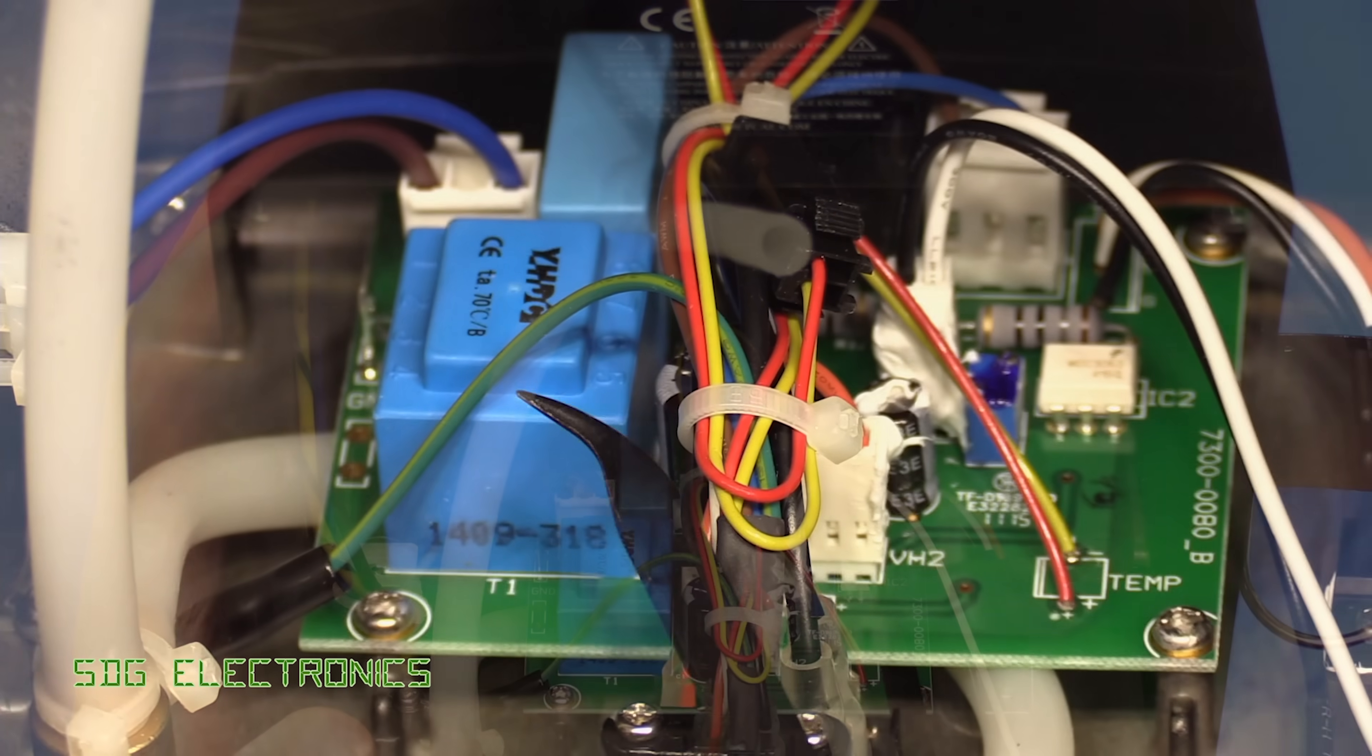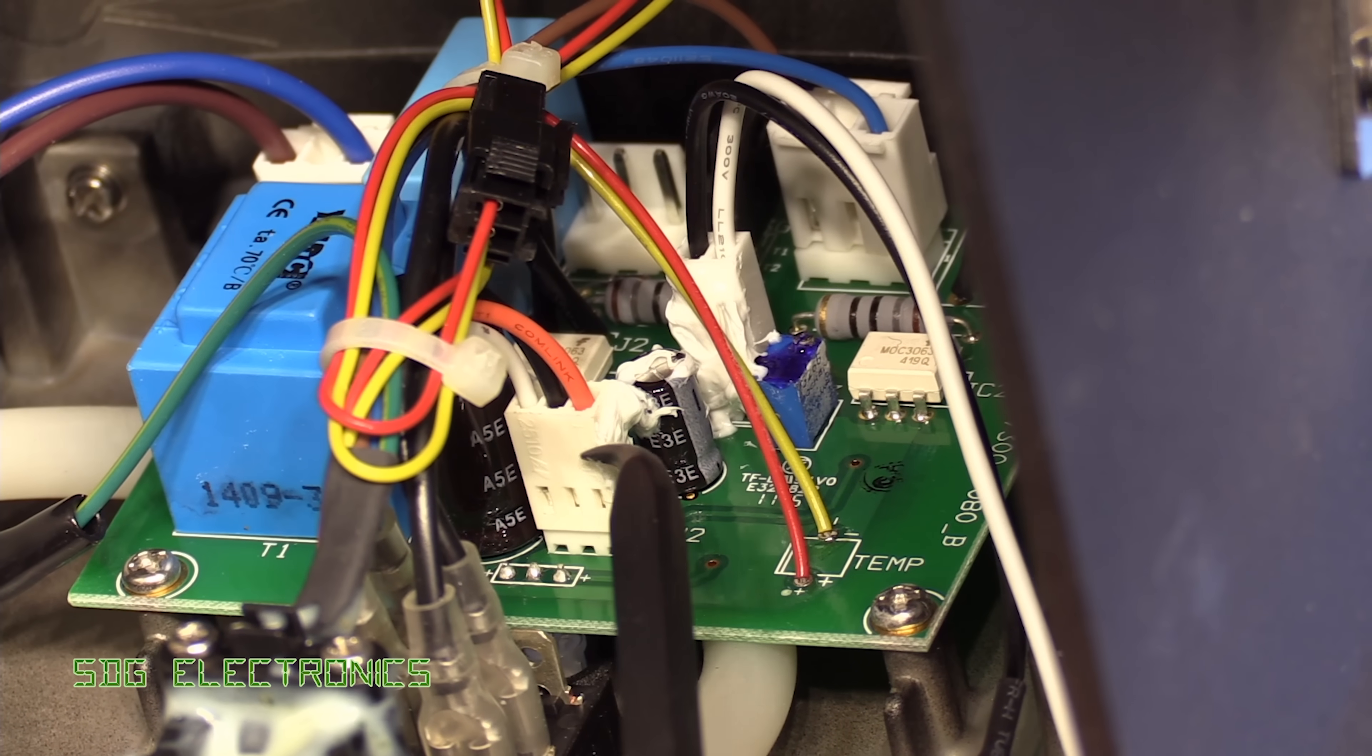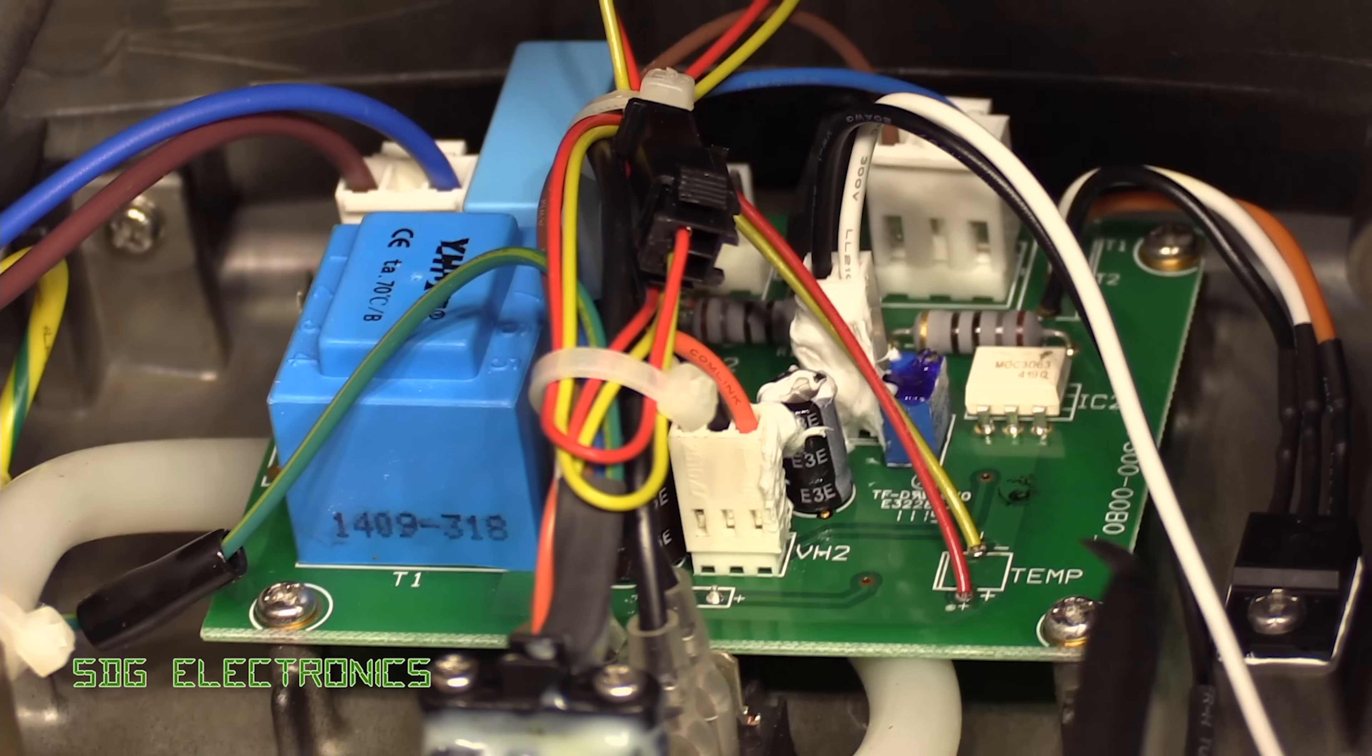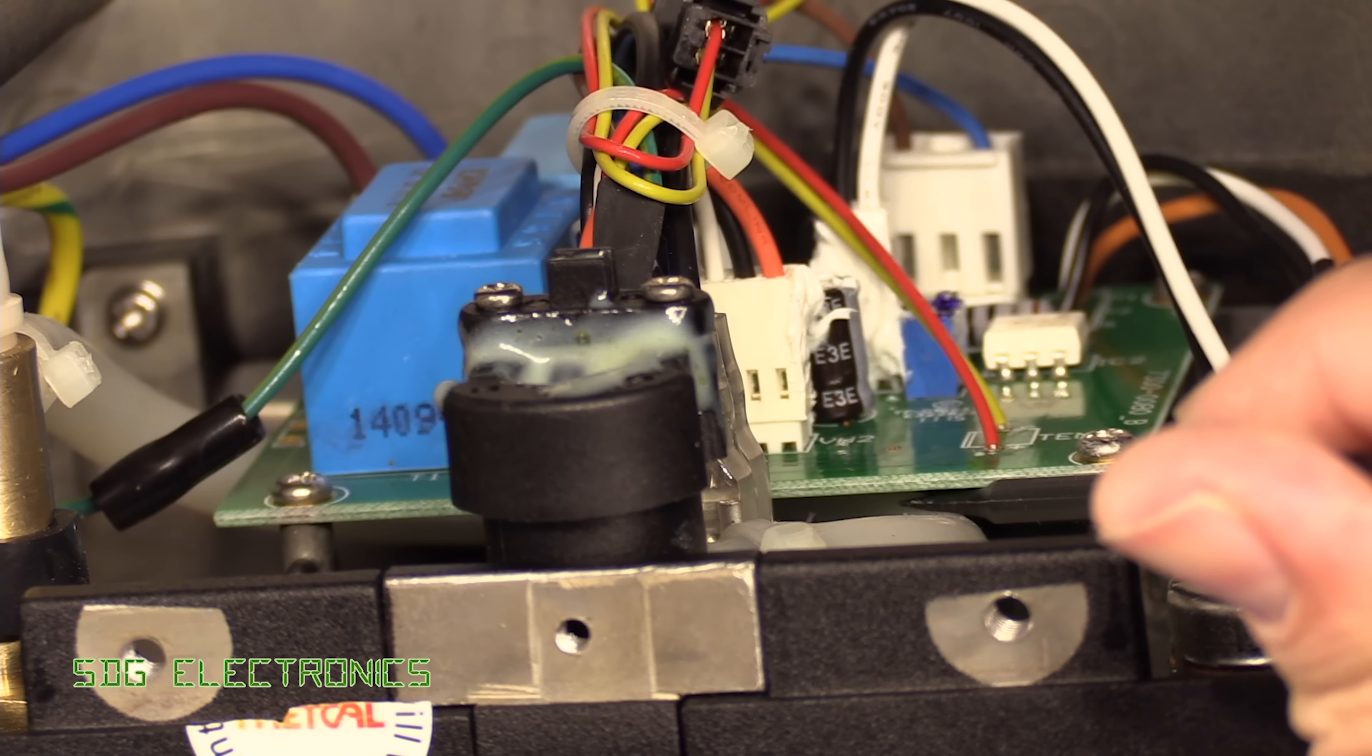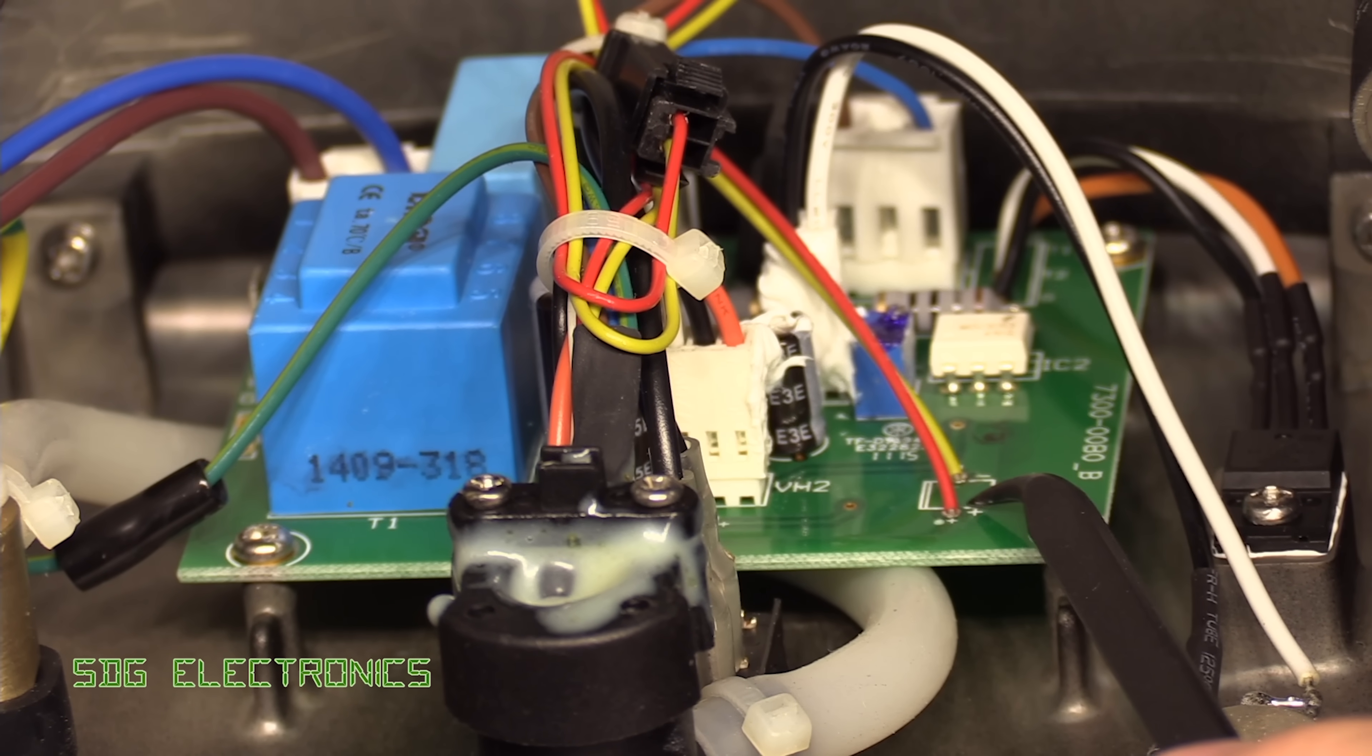So the PCB itself is quite simple. We've got a little transformer here for the electronics, we've got a couple of electrolytic capacitors and a bridge rectifier, we've got our optocoupler driver for the triac. It doesn't look like there's anything else on there, but there's actually a couple of surface mount parts underneath, a couple of eight pin devices. I suspect one is something like a PIC 12F. All it needs to do is do some kind of calibrated temperature.